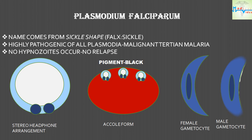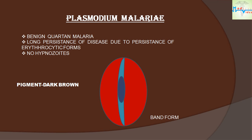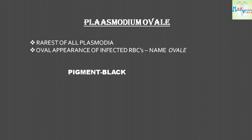The female gametocyte of P. falciparum is crescent shaped and the male gametocyte is banana shaped. Plasmodium malariae causes benign quartan malaria. The long persistence of the disease is due to persistence of erythrocytic forms and not due to hypnozoites — there are no hypnozoites in P. malariae. In the erythrocyte, they form elongated shapes giving rise to a band form. Plasmodium ovale is the rarest of all plasmodia; the oval appearance of infected RBCs gives it its name.